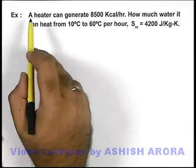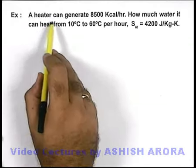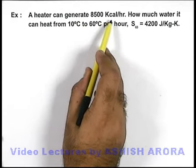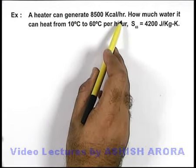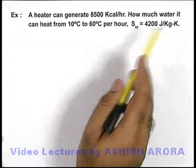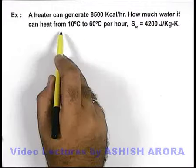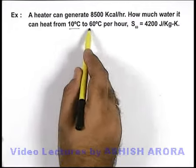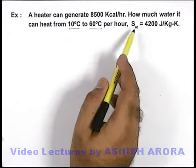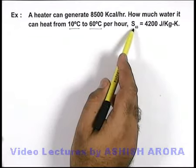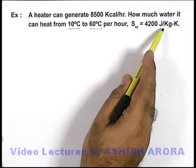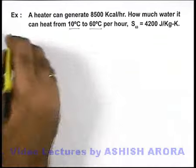In this example, we are given that a heater can generate 8500 kilocalories per hour, and we are required to find how much water it can heat from 10 degrees centigrade to 60 degrees centigrade per hour. We are also given that the specific heat of water is 4200 joules per kilogram kelvin.